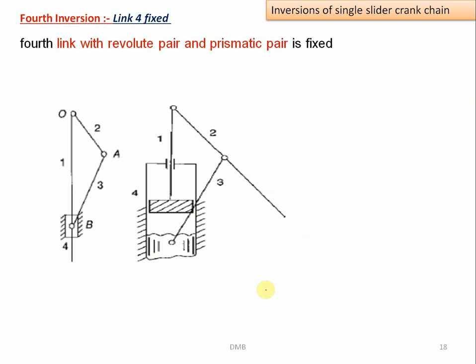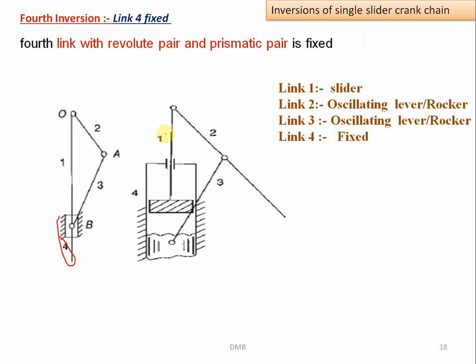The fourth and last inversion of the single slider crank chain is obtained by fixing link number four — the slider of the first inversion. This gives us the hand pump. Link one slides inside the fixed cylinder (link four). Link number two oscillates about its pivot point, link number three also oscillates about a fixed pivot, and link number four is fixed. This is the hand pump mechanism.